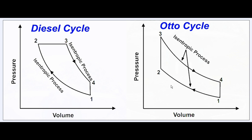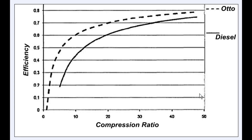The diesel cycle is known as an isobaric process, where pressure stays constant, while the Otto cycle is referred to as isochoric, where volume stays constant. These are theoretical concepts, but they illustrate the major differences in how the diesel and Otto cycles function theoretically.